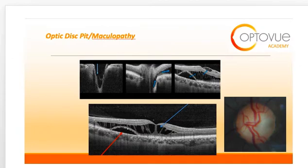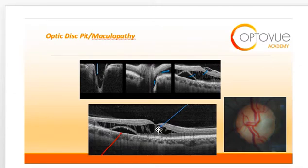The final entity I will discuss is that of optic disc pit and associated maculopathy. Optic disc pit is a rare congenital anomaly of the optic nerve head, and associated maculopathy is commonly reported. OCT of optic disc pit maculopathy can include subretinal fluid, as illustrated here with the red arrow, and schesis-like cavities as illustrated by the blue arrow. The outer retinal layers are often affected, extending from the disc to the macula.